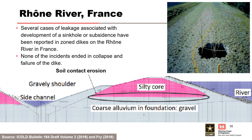Several cases of leakage associated with the development of a sinkhole or subsidence have been reported in zoned dikes on the River Rhone in France. The dikes are clay-silt embankments with gravel layers on the upstream and downstream slopes, often on gravel foundations. Soil contact erosion occurs when high river levels cause high velocities in the gravel foundation, leading to initiation at the clay-silt fill and gravel interface. Soil contact erosion may be interrupted if the Darcy velocity is not high enough or does not remain high enough long enough to sustain continuous erosion. None of these incidents ended in collapse; diaphragm walls were installed through the embankments into the gravel foundation to reduce flow velocities below critical values.